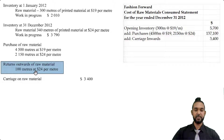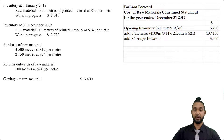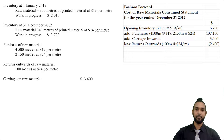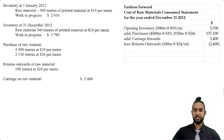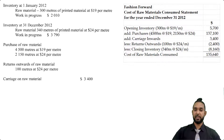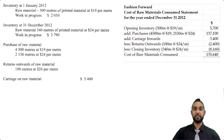The next thing we look at is returns outwards of raw materials — 100 meters at $24 per meter. To find the value of the returns out we multiply, and we are subtracting the returns out because if you send back goods, you no longer have to pay for them — they no longer form part of your cost structure. The final thing is the closing inventory: 340 meters at $24 per meter, which gives us $8,160. We add and subtract going down, do our arithmetic, and we get a total cost of raw materials consumed of $135,640.